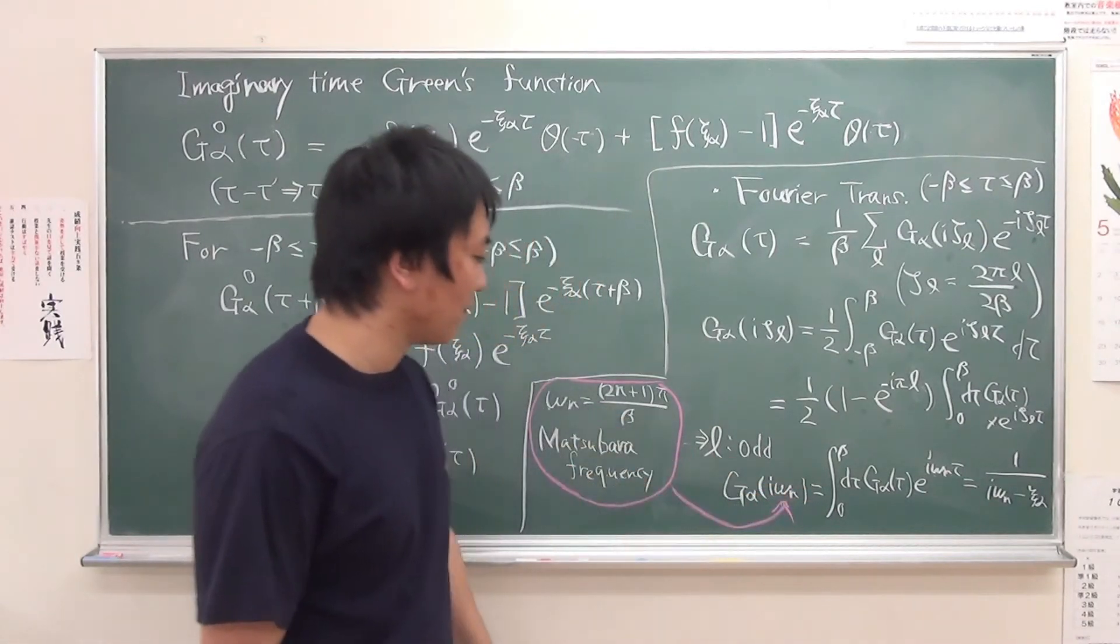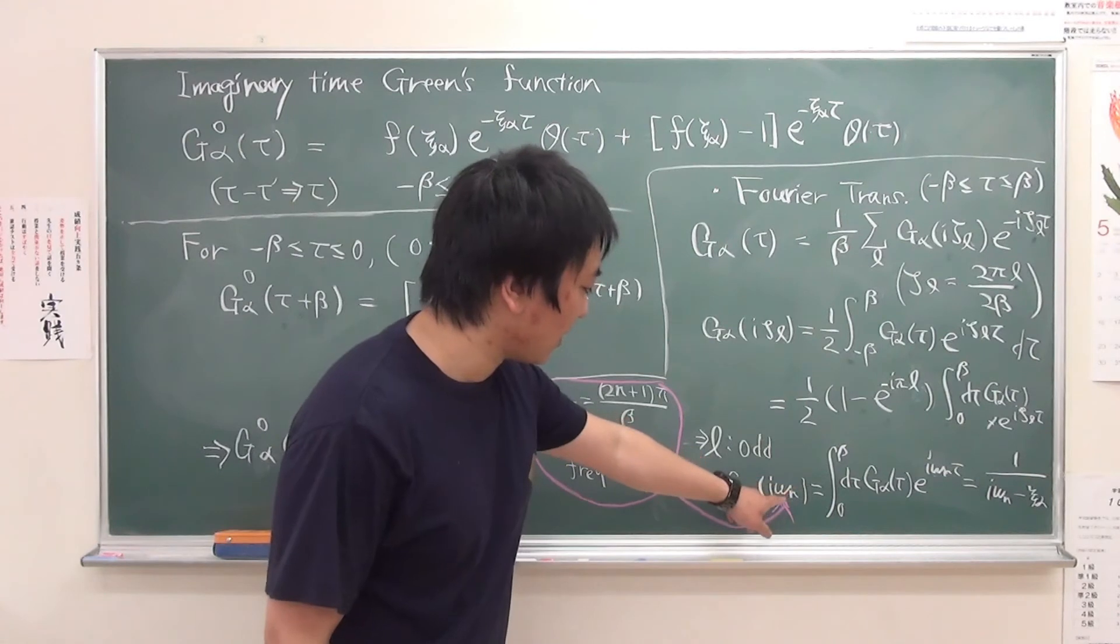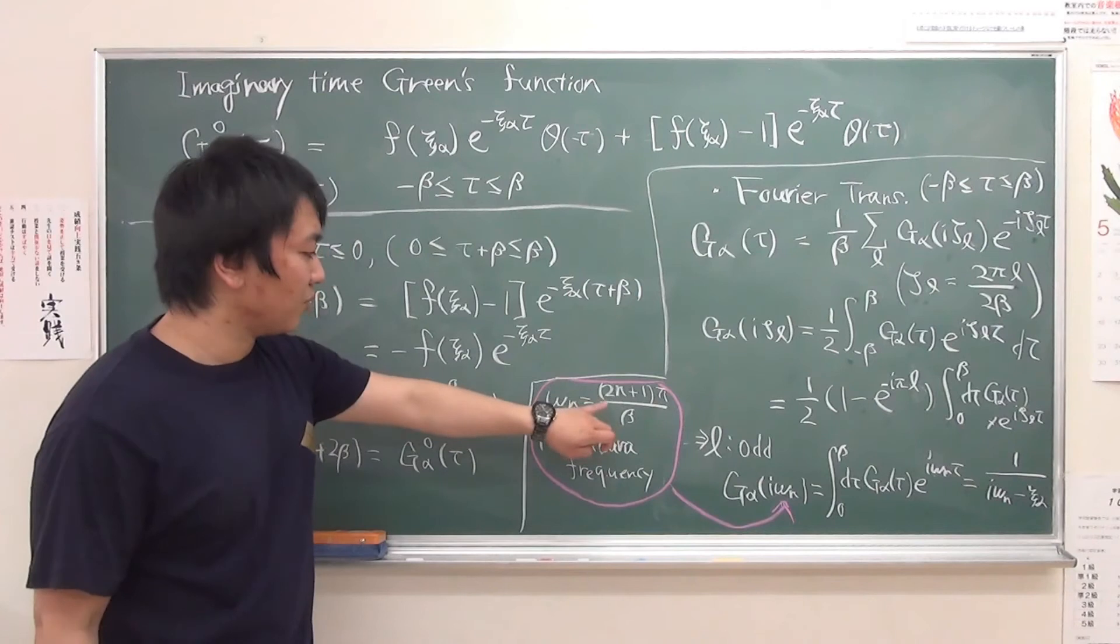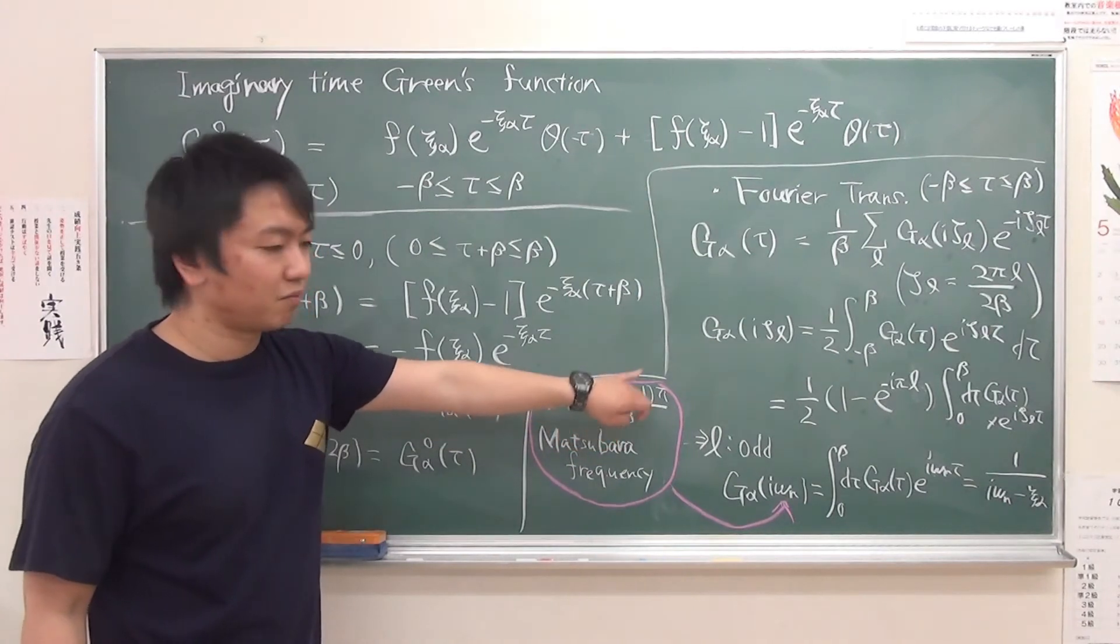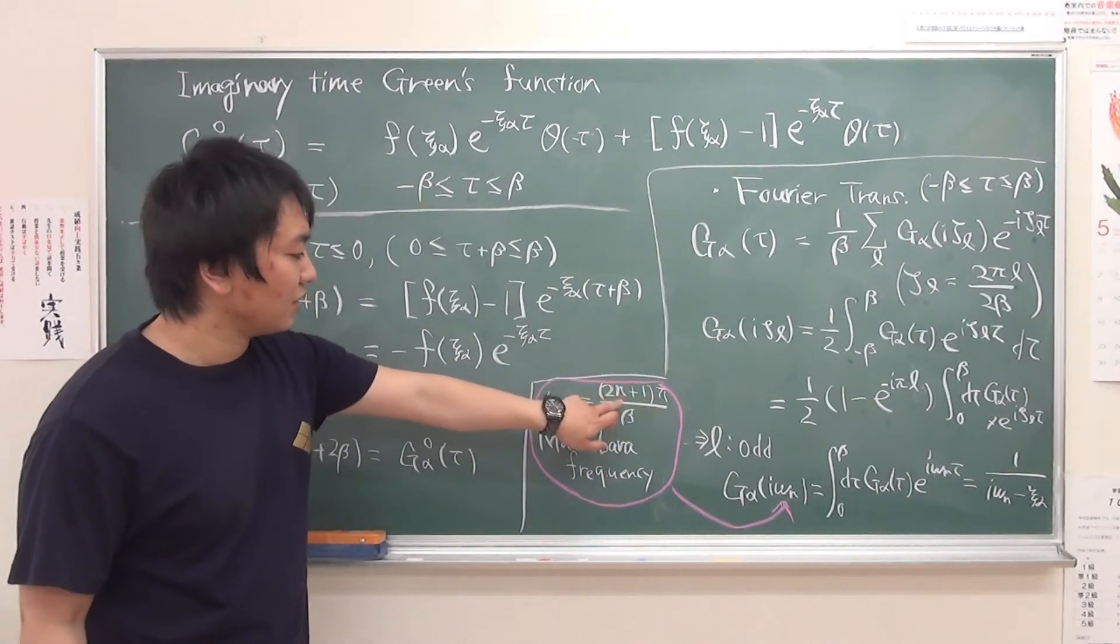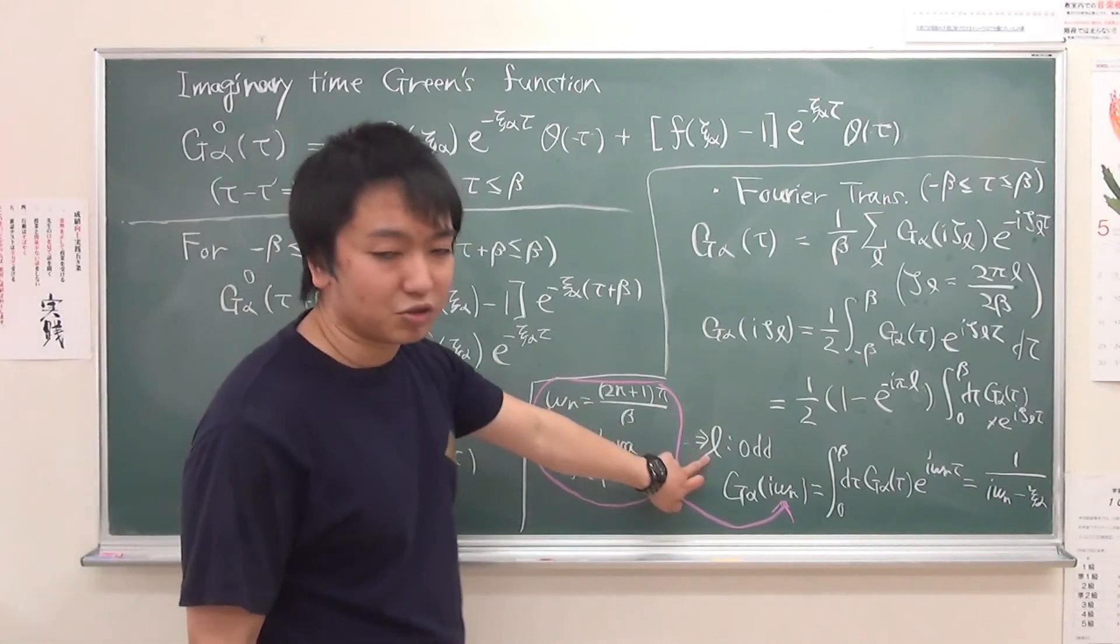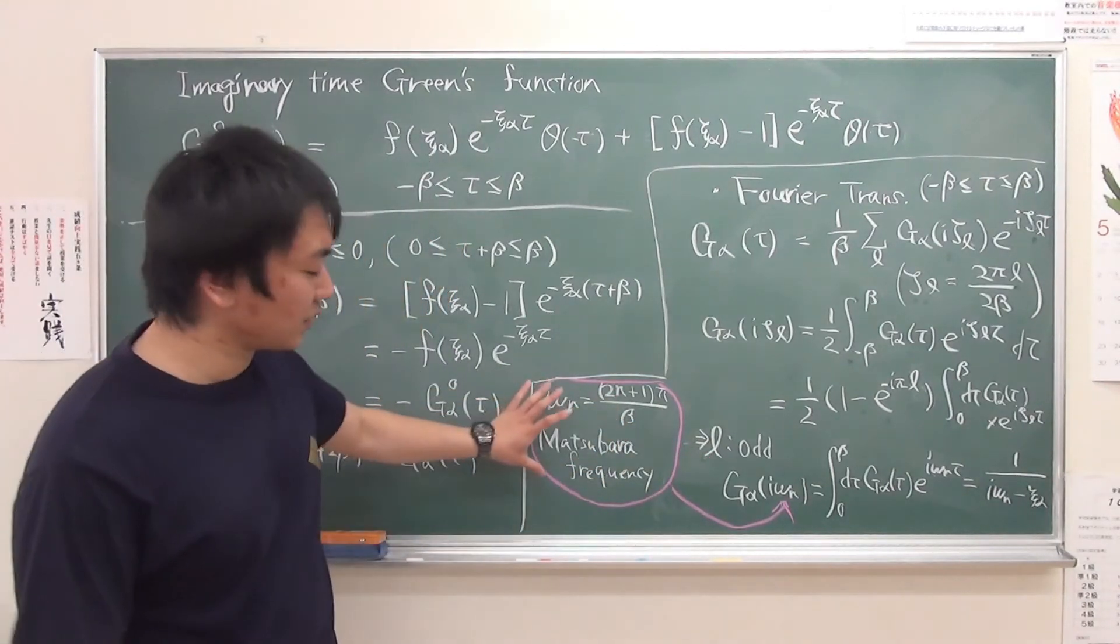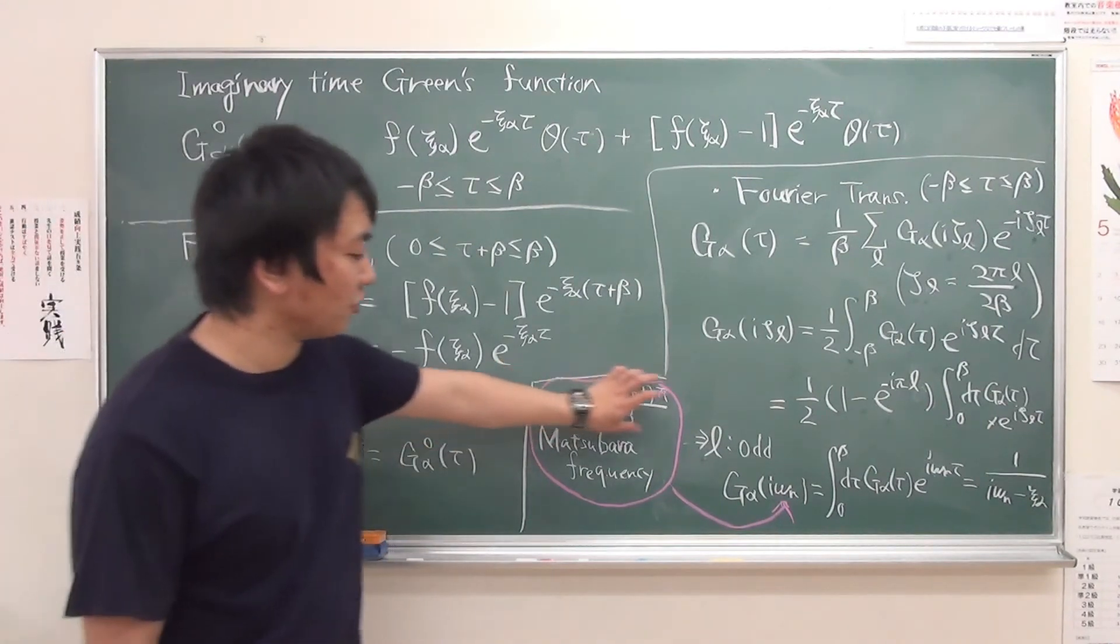But L is now given by like 2 times n plus 1. So because L is an odd integer and n is now integer. So this is called Matsubara frequency. This is just for fermion case.